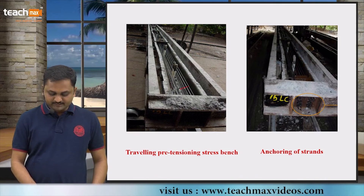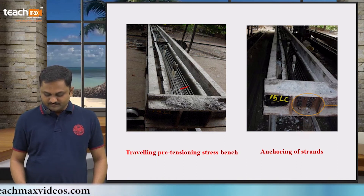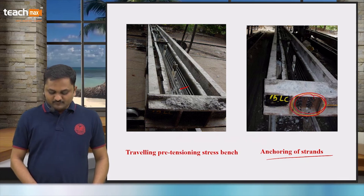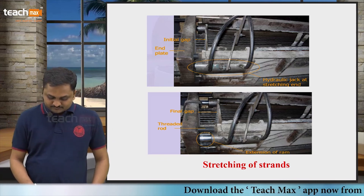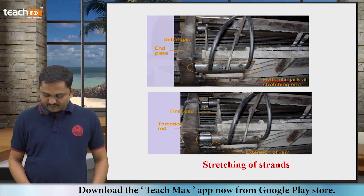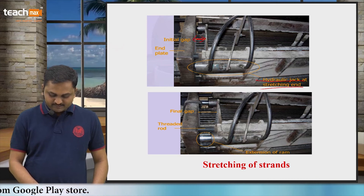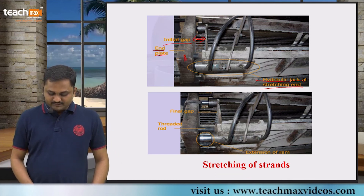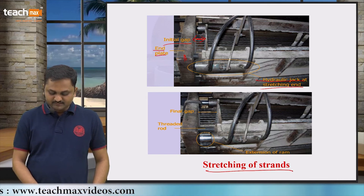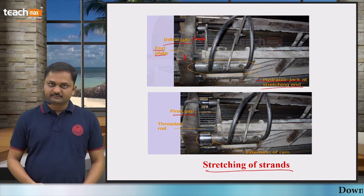Observing the figure, this is the mold and these are the tendons which are pulled first, then concrete is poured. This shows the anchoring of strands. In the traveling pre-tensioning stress bench, the hydraulic jack at the stretching end is applied at the end. There is an initial gap and an end plate. Once we stretch the strands, the initial gap increases, meaning we provide extension to the tendons and pre-stress is induced.